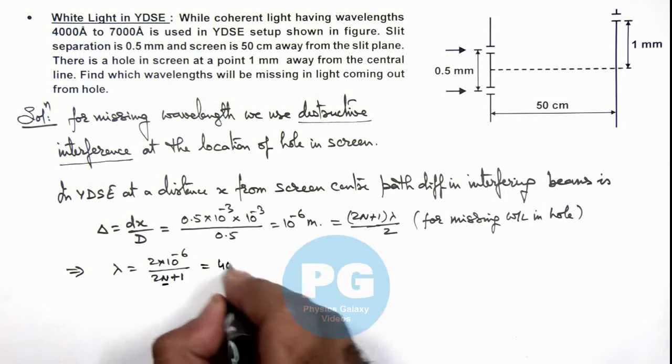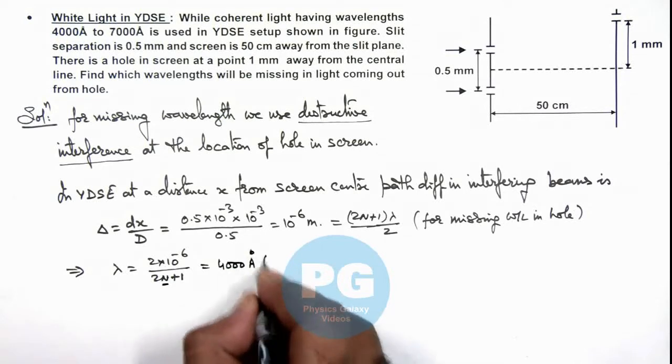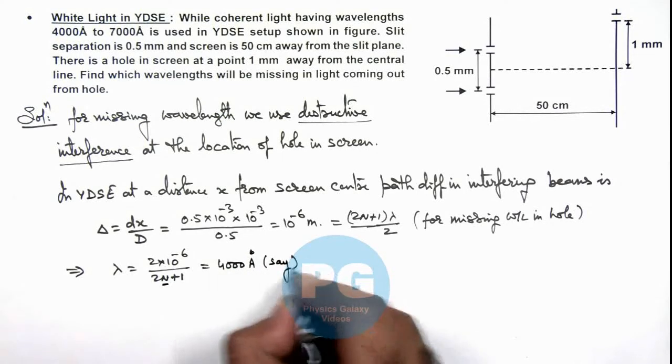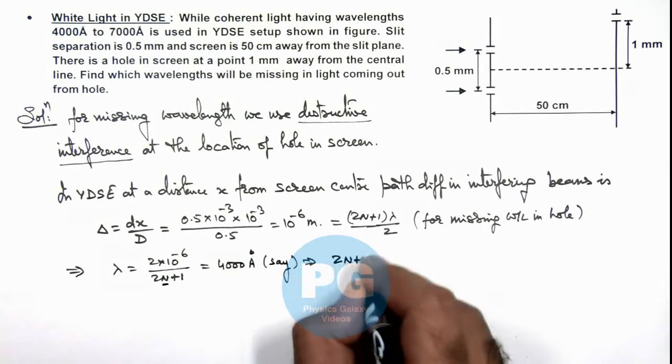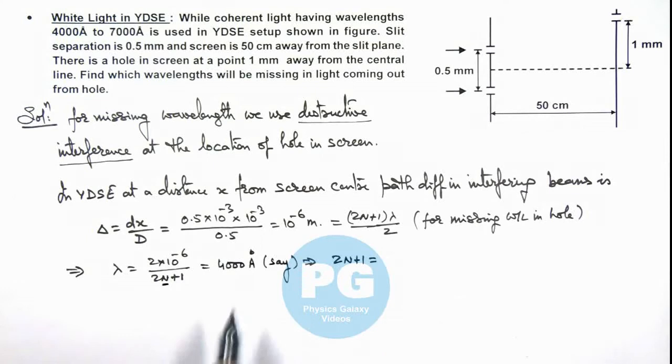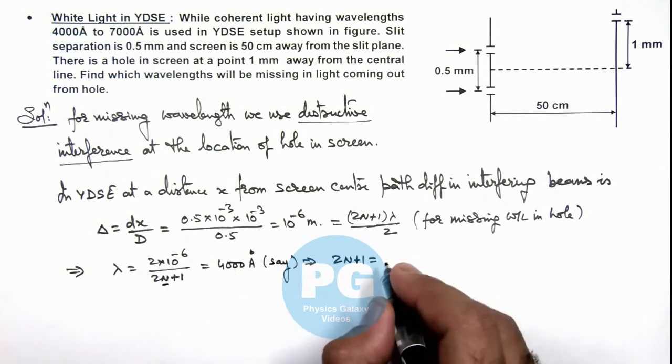If lambda is 4000 angstrom, this implies we are getting the value of (2n+1) equal to 2 × 10⁻⁶ divided by 4 × 10⁻⁷. Rearranging these terms, we'll get 2n+1 is equal to 5.